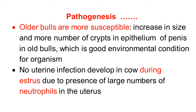Older bulls are more susceptible and harbor the organism because the crypts are larger in size and greater in number. In the crypts of older bulls, there are microaerophilic conditions, which provide a very good medium for the growth and development of this organism. So older bulls are more susceptible because of the greater size and number of crypts.